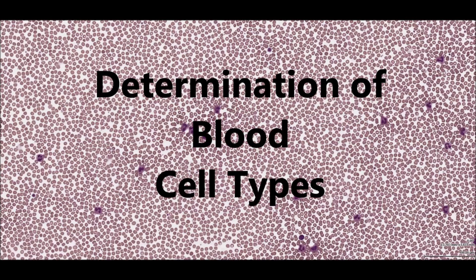Determination of blood cell types. All immune cells are produced in the bone marrow, and each arises from a stem cell. Their maturation pathways will be dependent upon cytokines in the local surroundings.